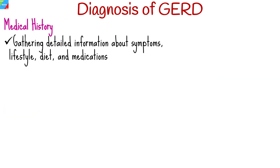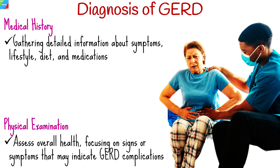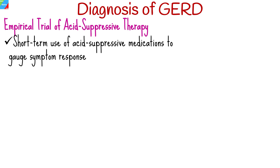Diagnosing GERD involves a combination of patient history, symptom evaluation, and medical tests. The initial step involves gathering detailed information about symptoms, lifestyle, diet, and medications, along with a crucial assessment of frequency and duration of hallmark symptoms like heartburn and regurgitation. A physical examination assesses overall health, focusing on signs that may indicate GERD complications. An empirical trial of acid suppressive therapy involves short-term use of acid suppressive medications to gauge symptom response.